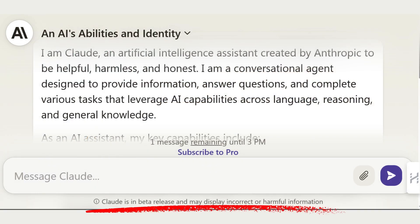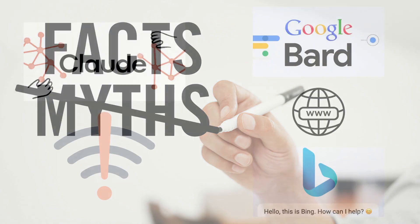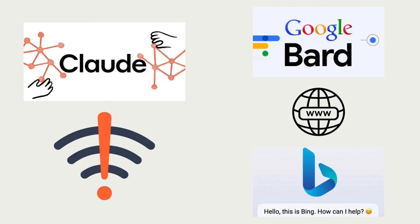Although Claude 2.1 boasts up to 30% more accuracy, there is still a warning that mistakes and inaccuracies can occur, as it is not 100% correct all the time. So I would still recommend that you double-check facts before using the information in any official capacity. Claude 2.1 does not have direct access to the internet, but it is trained on data accurate up to 2023, unlike Google Bard and Bing Chat that search the web for answers.